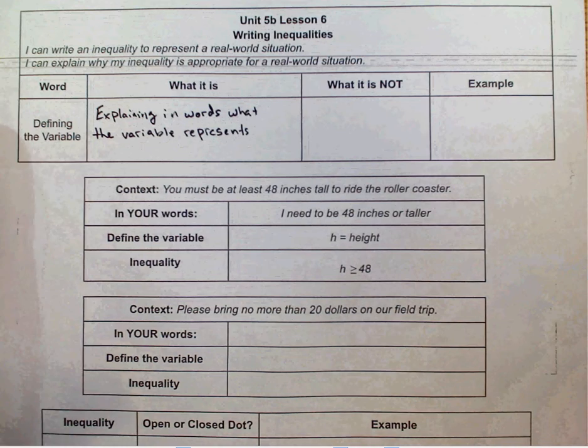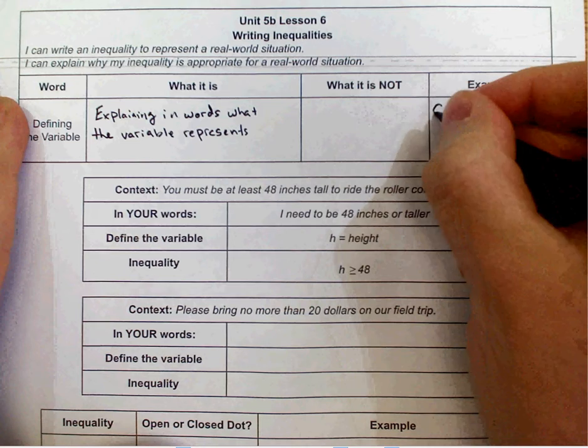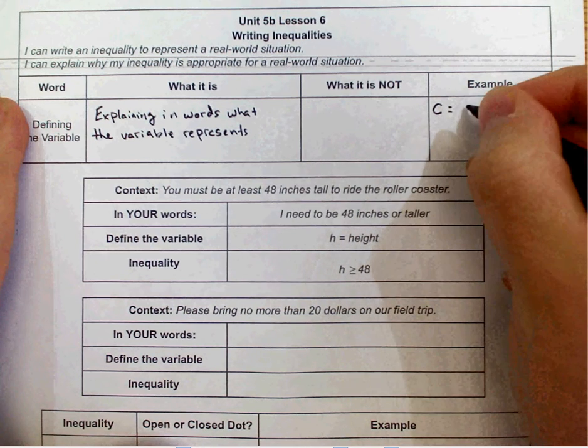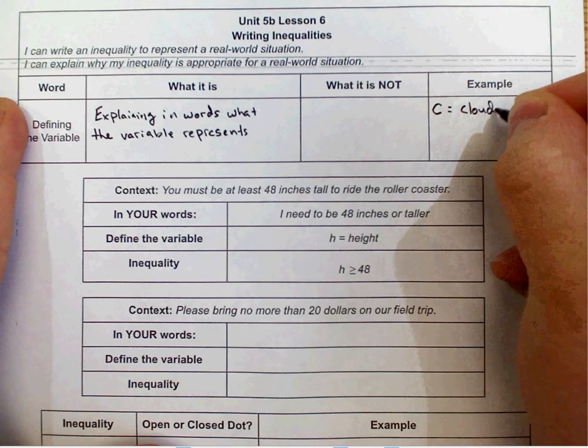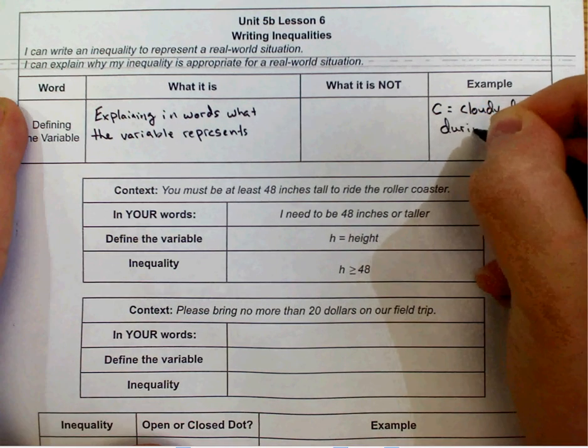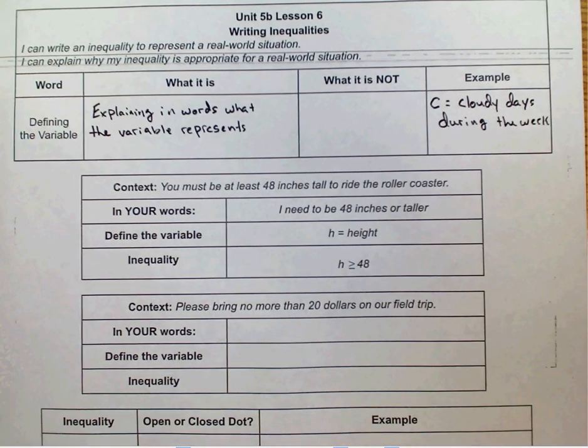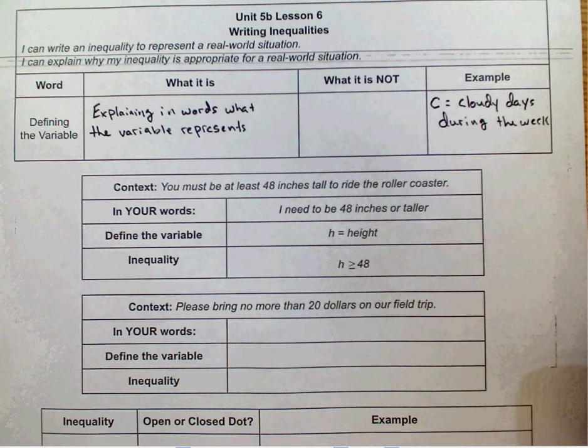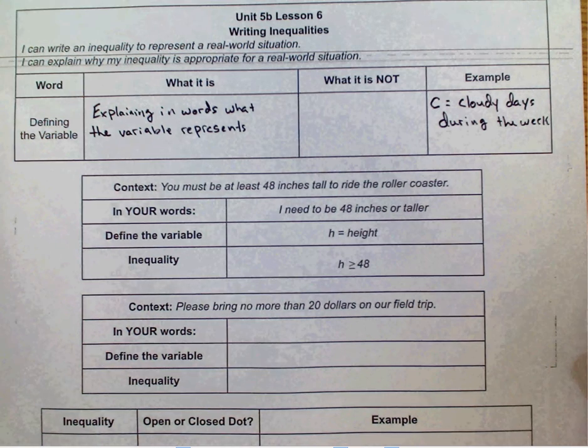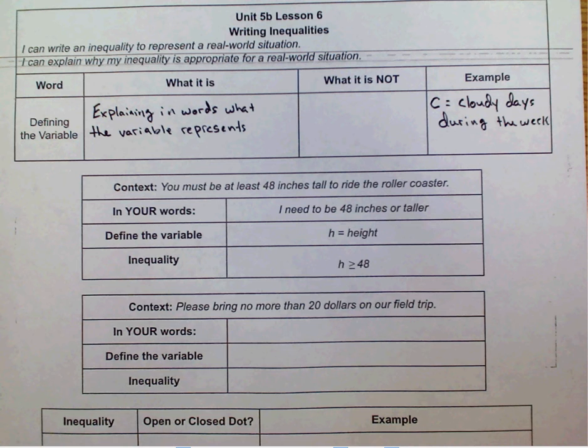So if we were to give an example of that, we would say C equals cloudy days during the week, or L equals lost money. Anything along those lines. So it tells you exactly what that variable means. Like what does it represent? Now a variable can represent any possible number, but what is that label for that number?